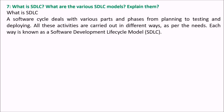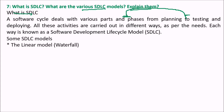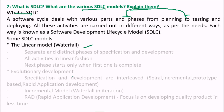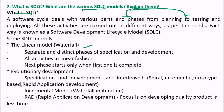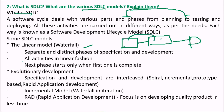What is SDLC — the software development lifecycle — and what are the various SDLC models? The software development cycle deals with various phases from planning to testing and deployment, covering everything from feasibility study through maintenance. Each way of carrying out these activities is known as an SDLC model. The first and most basic is the Waterfall model, which has separate and distinct phases of specification and development; all activities are linearly fashioned, and the next phase starts only when the previous one is complete. Then there is evolutionary development, where specification and development are interleaved — this includes spiral, incremental, prototype-based, and rapid application development (RAD) models. The incremental model is essentially a waterfall model with iteration, while RAD focuses on developing a quality product in less time.